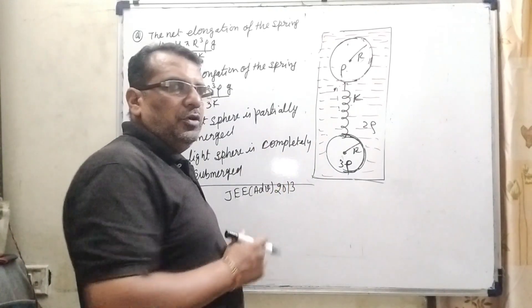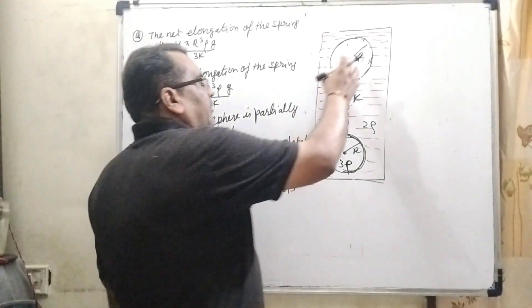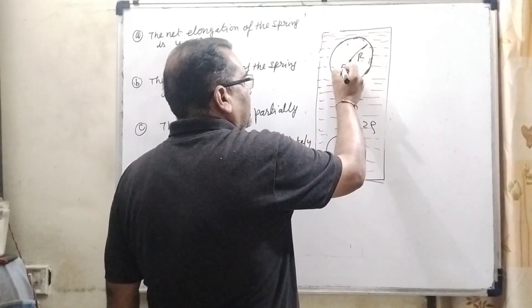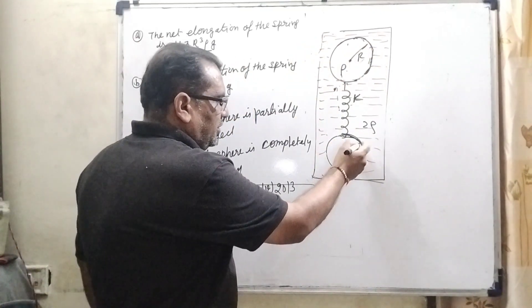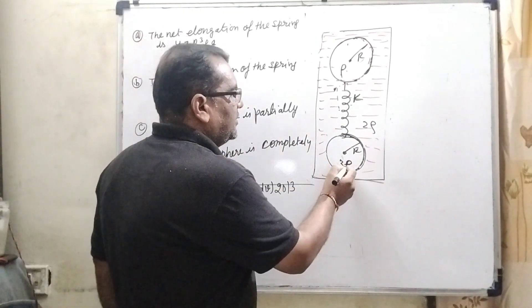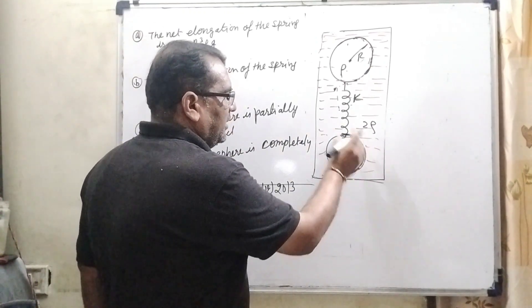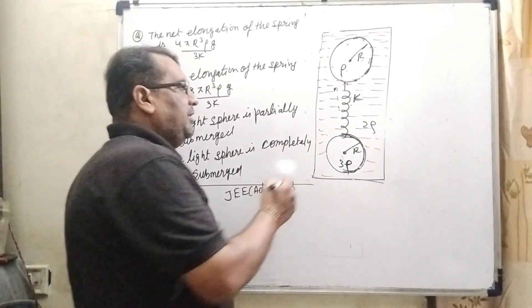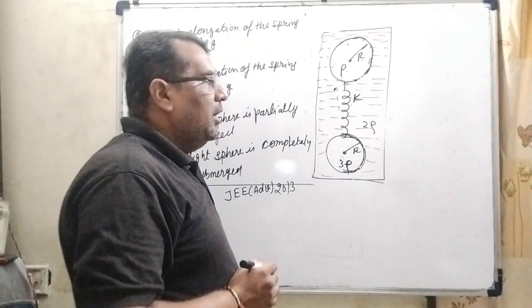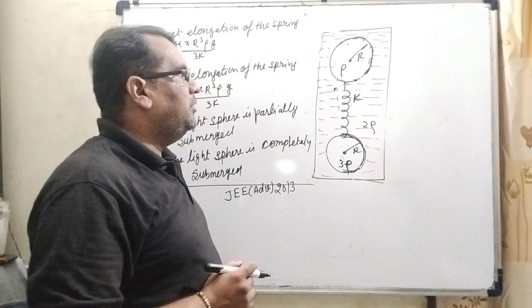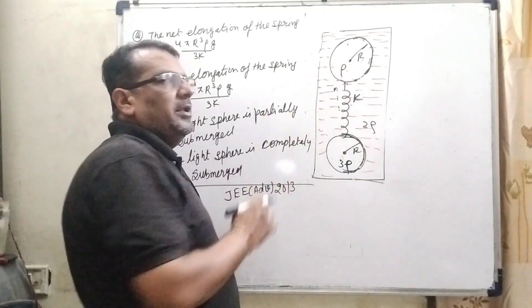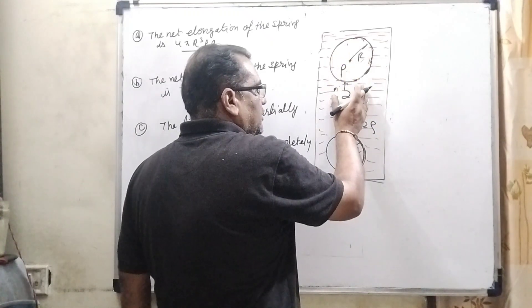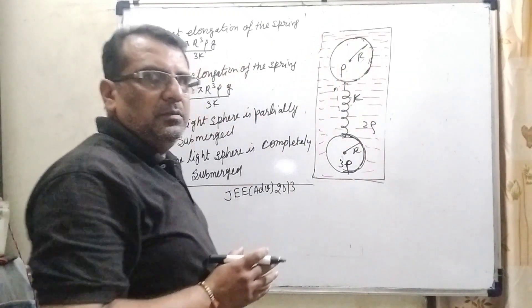I have drawn this diagram according to the question. The first sphere on top has radius R and density rho. The lower sphere has density 3rho, and both are connected by a spring of constant K. The liquid has density 2rho. In the first condition, we find the equilibrium of the first sphere: its weight plus the spring force equals the upthrust force.